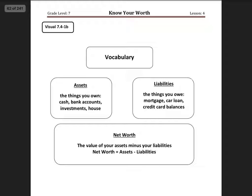Say your house is worth $250,000, but you owe $150,000 on it. So you have $100,000 good. When you do net worth, you add up all your assets and all of your liabilities and then subtract them.